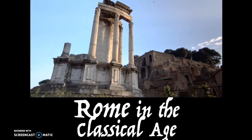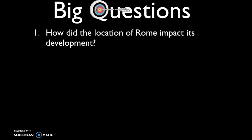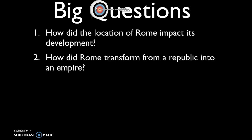Welcome back, young scholars. In this video, we will be discussing Rome in the Classical Age. The big questions you need to be able to answer after watching this video are: first, how did the location of Rome impact its development? Second, how did Rome transform from a republic into an empire? There will be another video that will cover two more big questions relating to Rome.